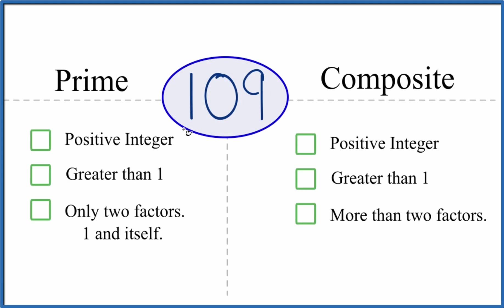How can you tell whether 109 is a prime or a composite number? Let's look first at whether 109 is prime.